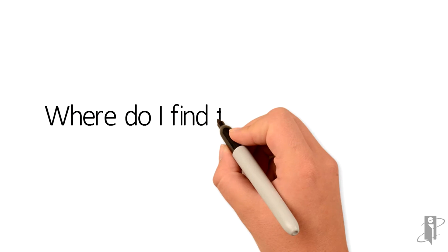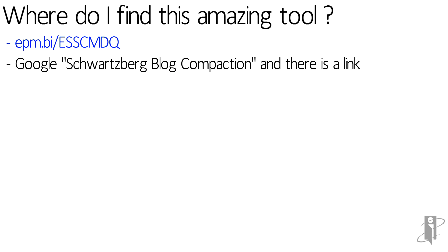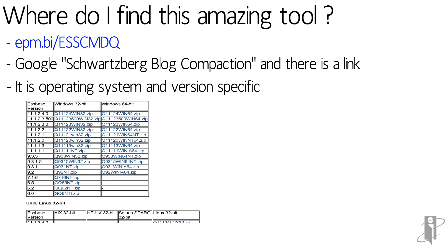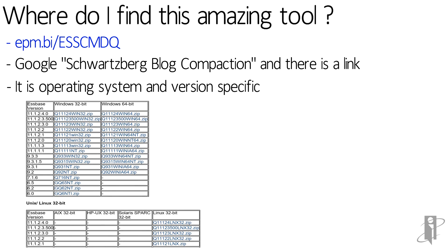Where do you find this amazing tool? Go to my blog and search for 'compaction' — there's a link to where you can download it. It's operating system and version specific. When you go to this page on Oracle support, you need an ID and password. You find the version you want, the operating system you want, and you download it. There's also a PDF on the site giving instructions for doing the outline compaction.